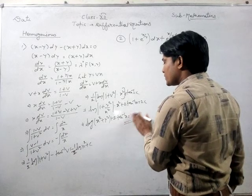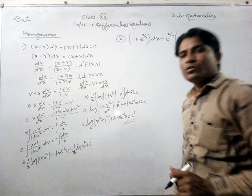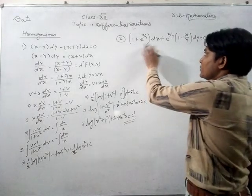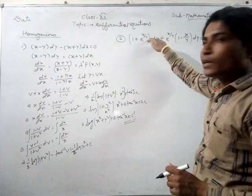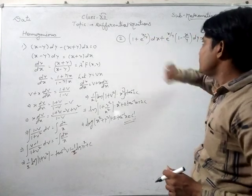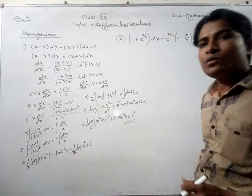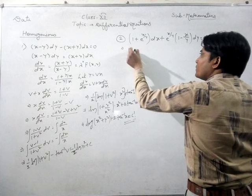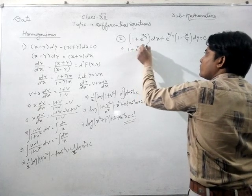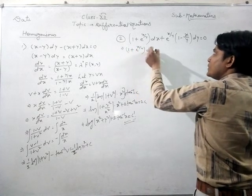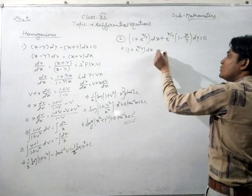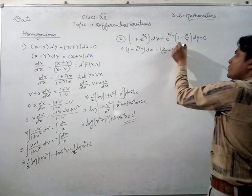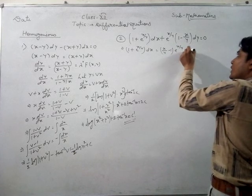There will be c dash as the arbitrary constant. So that is the final answer for the first question. Our second question involves the x/y terms, so it will be converted using dx/dy. The equation is: e to the power (x/y) dx equals (x/y minus 1) e to the power (x/y) dy.